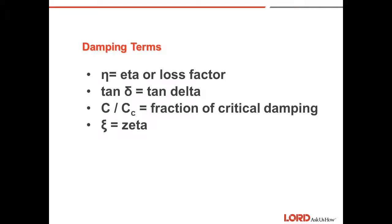Damping terms for the loss factor. Eta, or loss factor, tan delta is also one that's used. C over C sub C is the fraction of critical damping, or zeta, which is also the C over C sub C, or fraction of critical damping.